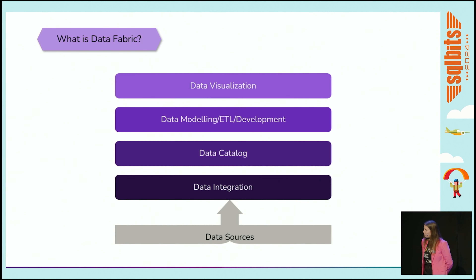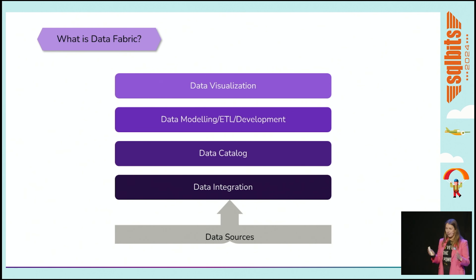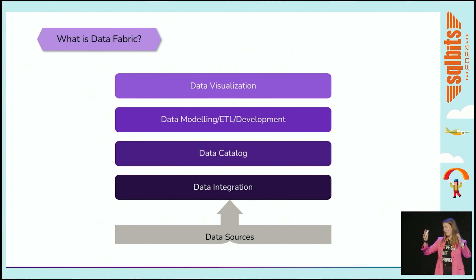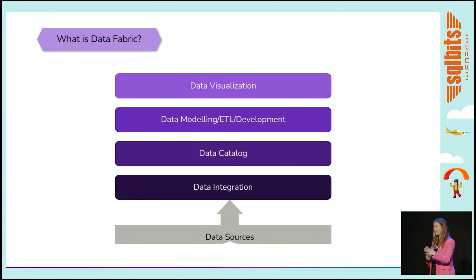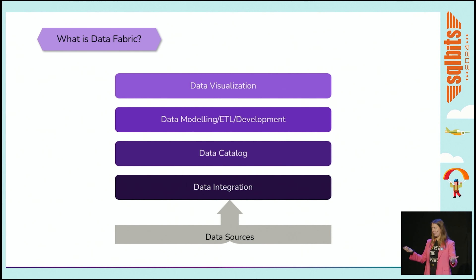From a technology point of view, a data fabric architecture has data sources going in, a data integration layer, a data catalog — important because this is where you know all about your data: where it is, how to use it, whether it's accessible — then data modeling and ETL development, and data visualization or consumption on top. Different organizations will tell you different stories about data fabric; some tools present it as an architecture, sometimes completely forgetting about the people.